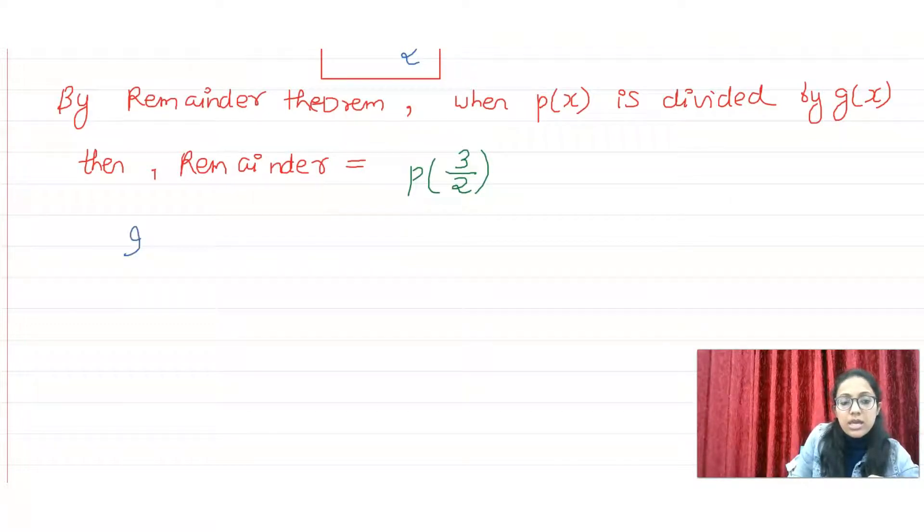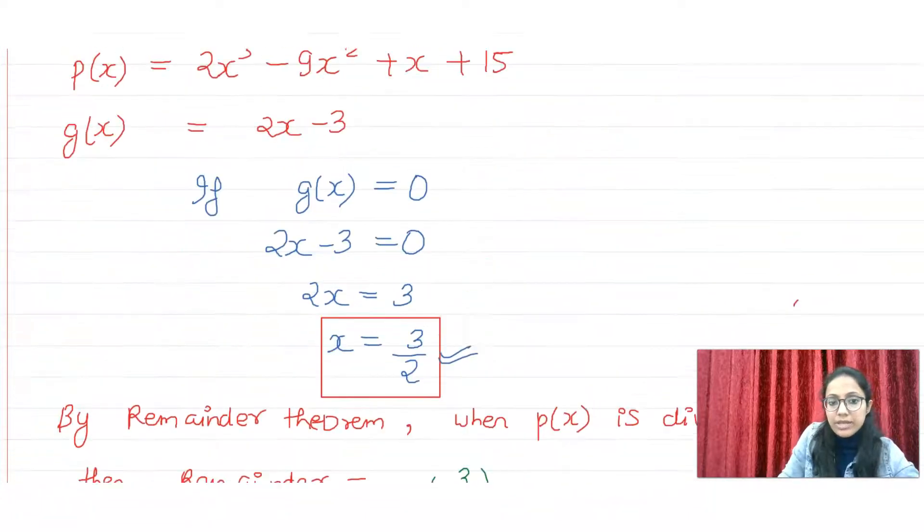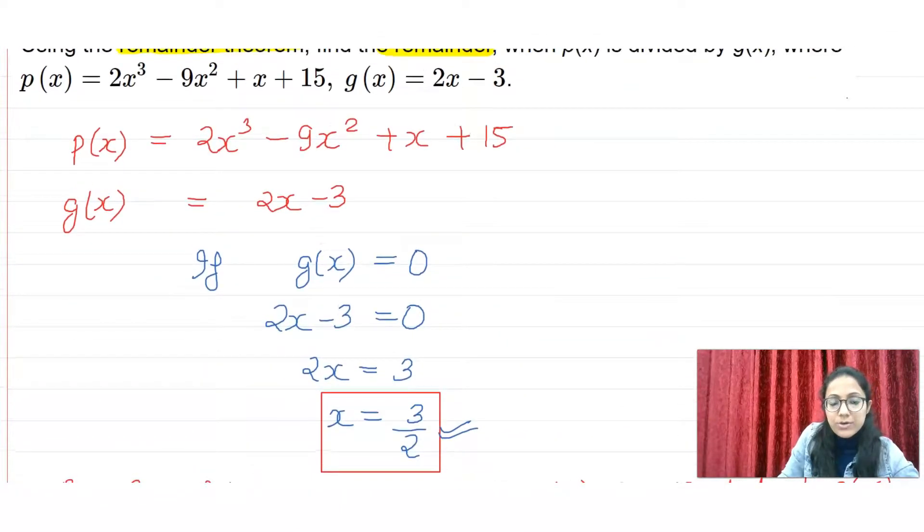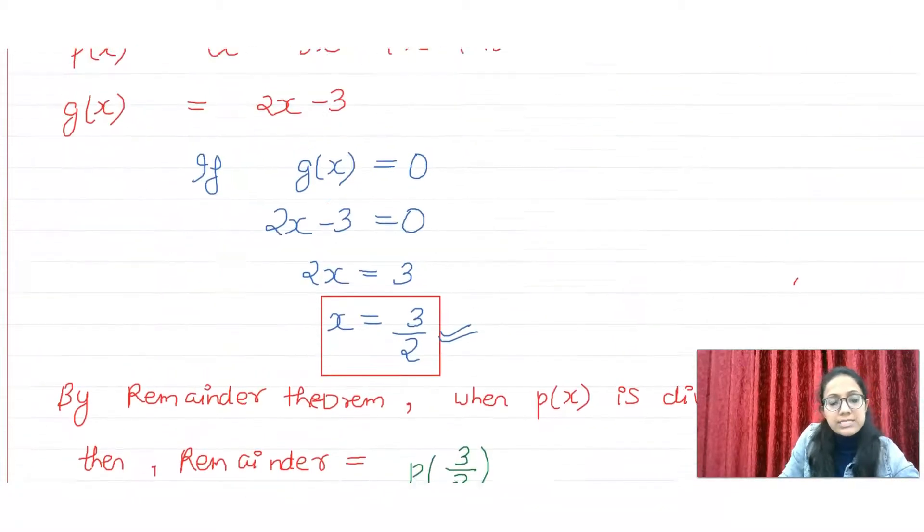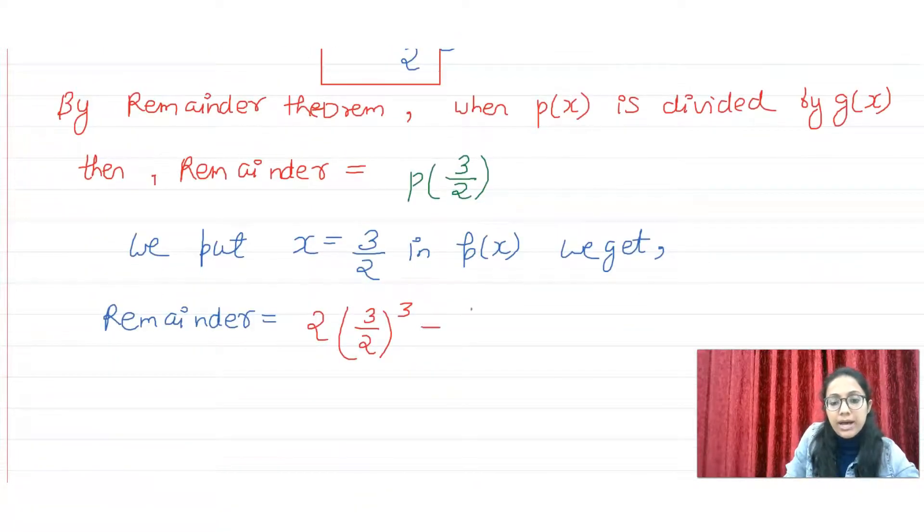Here, you will always write, we put x is equal to 3 by 2 in p of x. What will we find here? Then we get, what is your 2x cube? You will write here, what will your remainder be equal to? 2x cube, 3 by 2 cube. Then see, minus 9x square, 3 by 2 square.